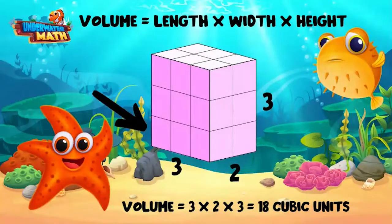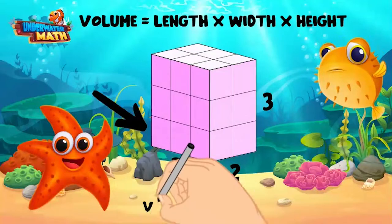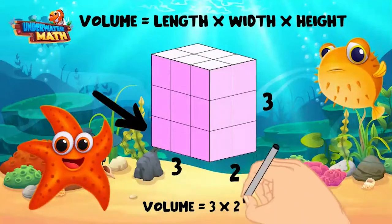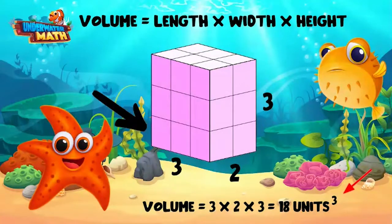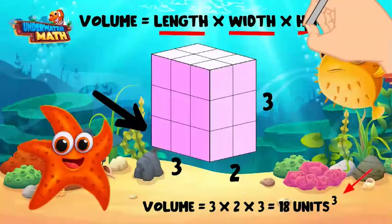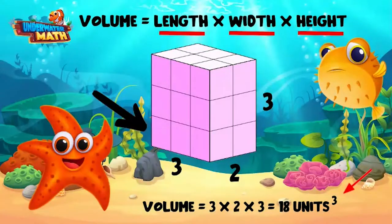The answer is in cubic units because we are using unit cubes. Sometimes we show cubic units by putting a small three — called an exponent — next to the unit. Volume uses an exponent of three because we are multiplying three dimensions together: length, width, and height.